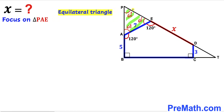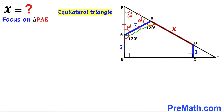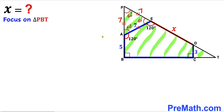We conclude that triangle PAE is an equilateral triangle since all angles are 60 degrees each. Since it is equilateral, all side lengths are congruent. We know side AE is 7 units, so side PE is 7 units and side AP is also 7 units.